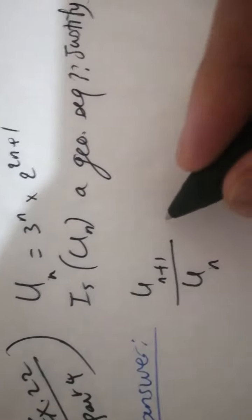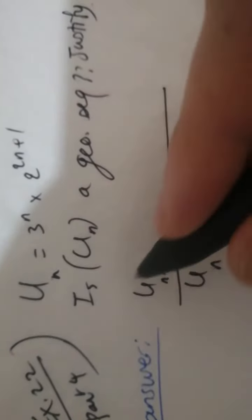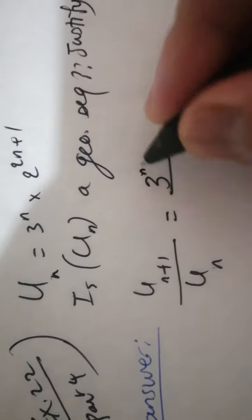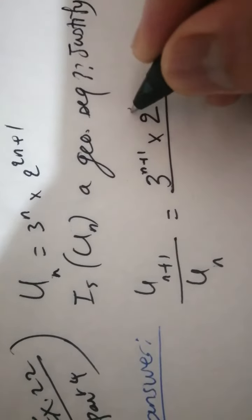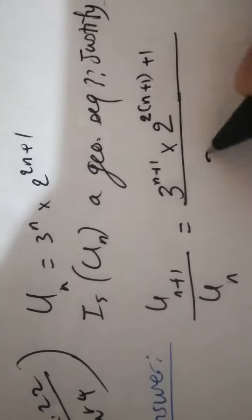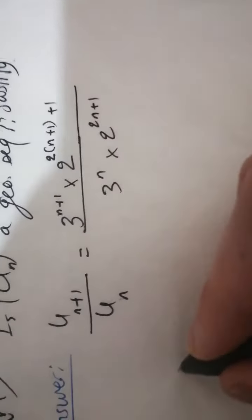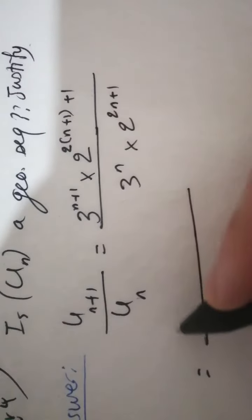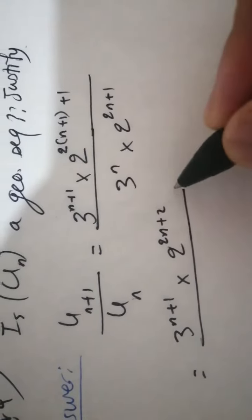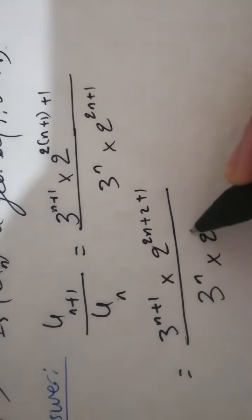We need to get UN plus 1. How do we get it? UN, but we have to add N plus 1. So UN plus 1 is equal to 3 power N plus 1 times 2 power 2N plus 2 plus 1, over UN, over 3 to the N times 2 to the power 2N plus 1. This equals 3 power N plus 1 times 2 power 2N plus 3 over 3 to the N times 2 power 2N plus 1.